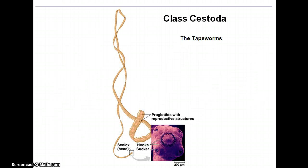So on to the cestodes, which are the tapeworms. You might recall that tapeworms actually exemplify all of those things that we had talked about that we consider adaptations towards a parasitic existence. And certainly they have really increased reproductive capacity, which is a major adaptation.